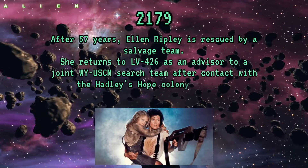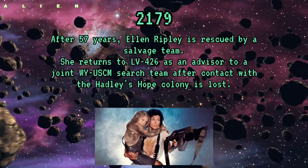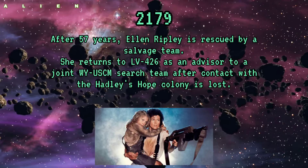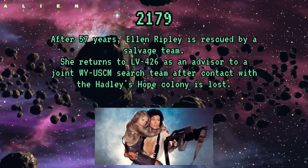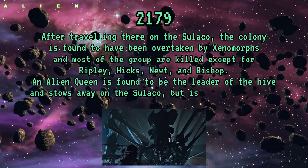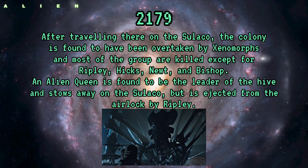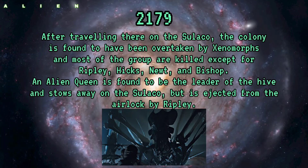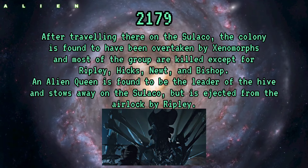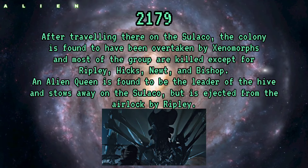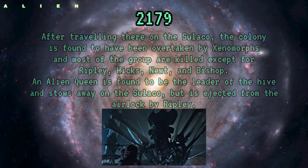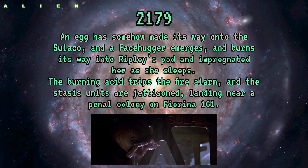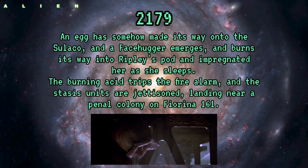2179: After 57 years in stasis, Ellen Ripley is rescued by a salvage team. She returns to LV-426 as an advisor to a joint Weyland-Yutani and USCM search team after contact with the Hadley's Hope colony is lost. Travelling on the Sulaco, the colony is found to have been overtaken by xenomorphs and most of the group are killed, except for Ripley, Hicks, Newt, and Bishop. An alien queen is found to be the leader of the hive and stows away on the Sulaco but is ejected from the airlock by Ripley. An egg has somehow made its way onto the Sulaco and a facehugger impregnates Ripley as she sleeps.